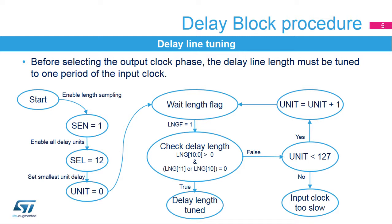Firmware must poll this bit before checking the delay line length feedback in LNG 11 to 0. When the LNG field is not 0 and either LNG bit 11 or bit 10 is 0, the delay line spans one input clock period and the delay line length tuning process is finished. Otherwise, the unit delay is increased and a new check is performed.